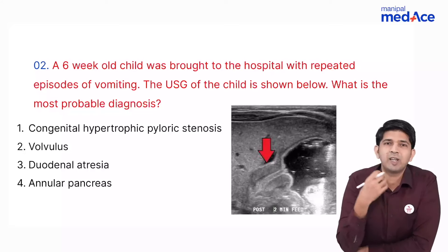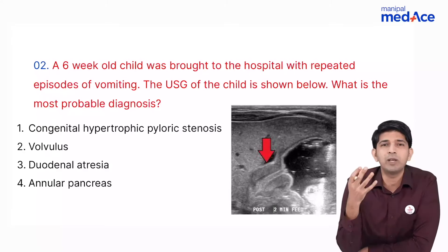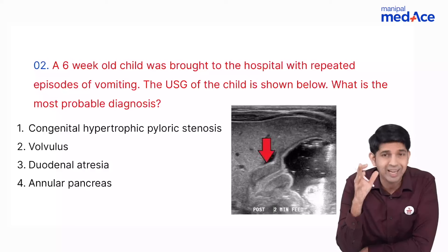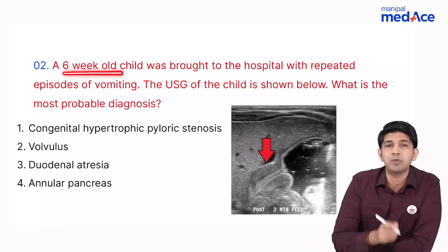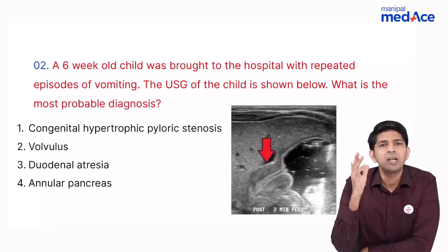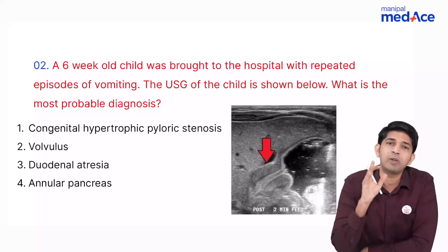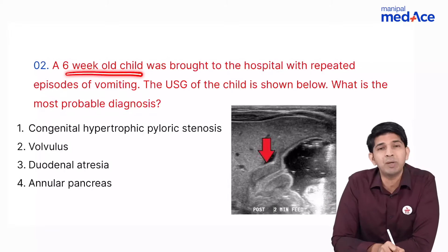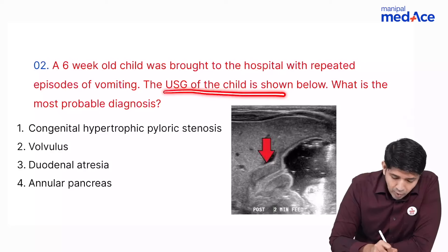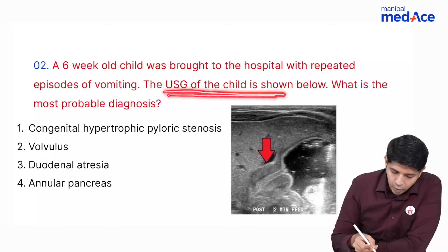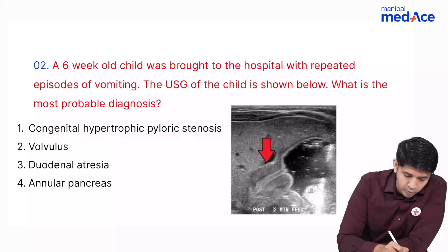This was a radiology image question where students panicked, but there were two obvious clues. First, it was a six-week-old child — not a newborn. In congenital hypertrophic pyloric stenosis, symptoms do not start at birth; they start around four to six weeks. Second, the patient had repeated vomiting and the image was a USG. The diagnosis was congenital hypertrophic pyloric stenosis.